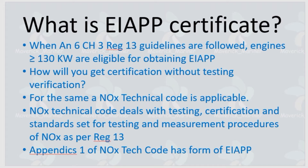The aim of the NOx Technical Code is to standardize testing and measurement procedures, test equipment, and the process of certification. There should be a standard set of certificates, standard testing procedures, and standard measuring procedures — all of which are mentioned in the NOx Technical Code. Appendix 1 of the NOx Technical Code contains a sample form showing how an EIAPP certificate is supposed to be structured.